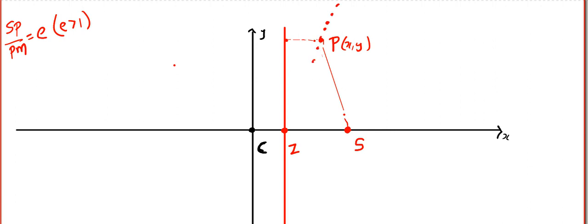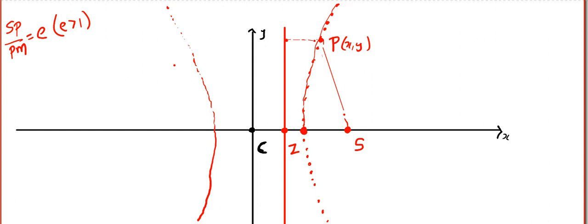So look at this — P will keep on moving and it will generate the standard hyperbola. I think you are able to see the movement of P on the right side. Similarly, another part will be generated on the left side. I am going to call this vertex as capital A and this vertex as A dash. We are going to do the proof almost similar to that of our ellipse.